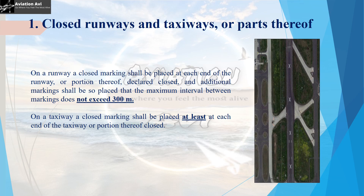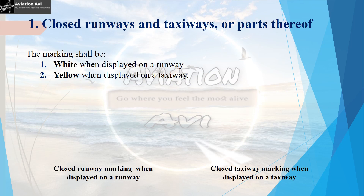So suppose we have closed this runway as shown in the image. There is a cross marking placed at each end of the runway and the intervening cross markings are placed such that the maximum distance between the two markings does not exceed 300 metres. When there is a closure of a taxiway, the cross marking should be placed at each end of the taxiway or the part that is closed. The cross marking on the runway should be white and that on the taxiway should be yellow.